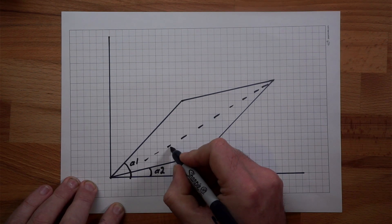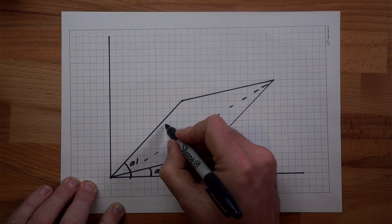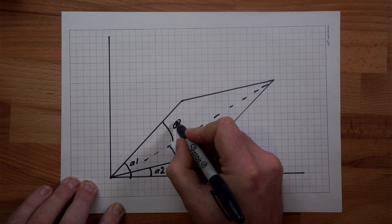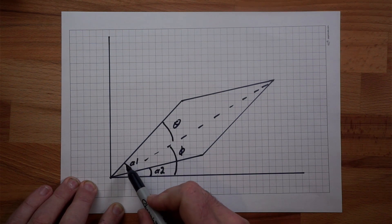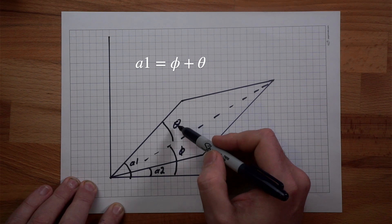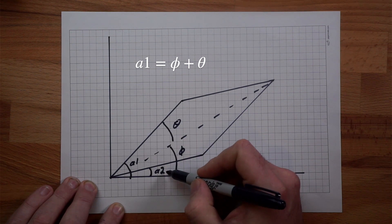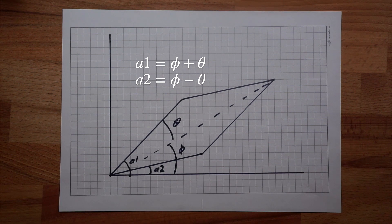Now we had our angles from before Phi and Theta and it's easy to see that our angle A1 for our first arm is simply equal to Phi plus Theta and our angle A2 is equal to Phi minus Theta and that's it that's all the maths we need to do to know how to position our arm.